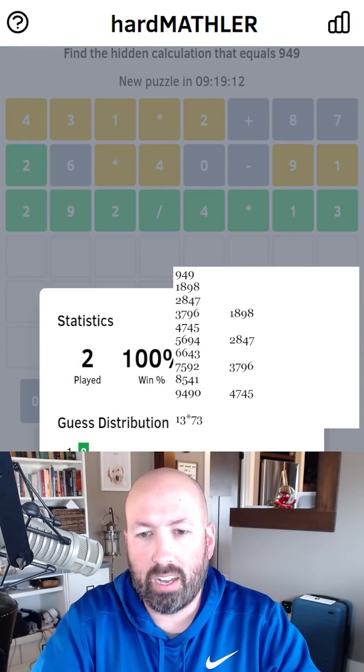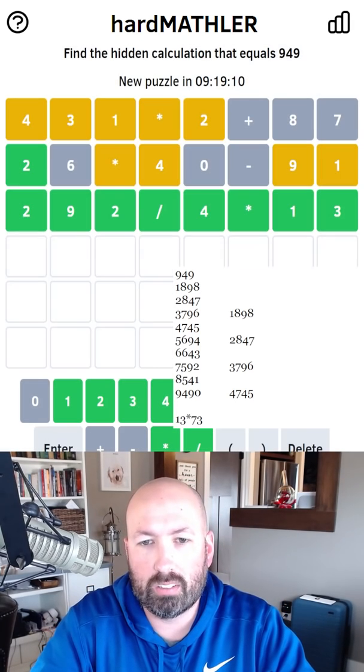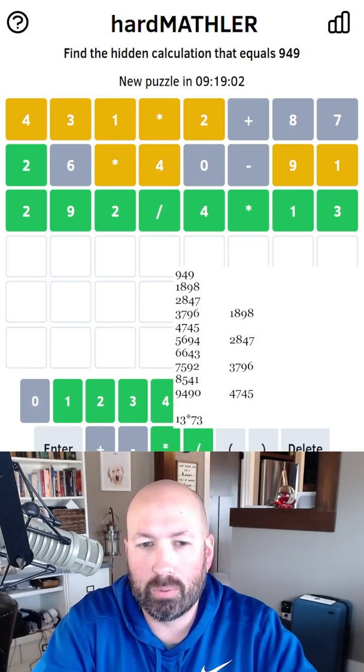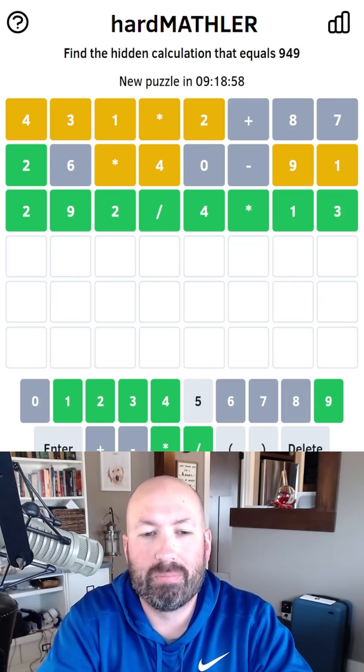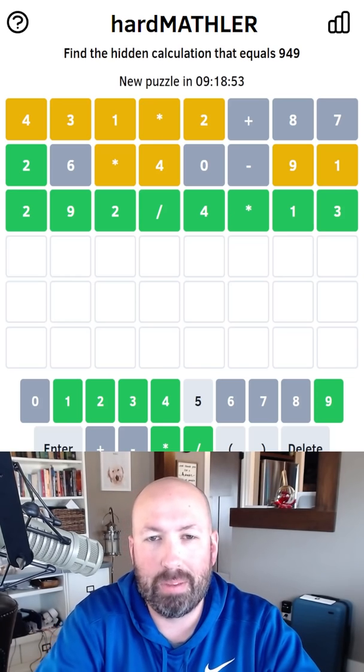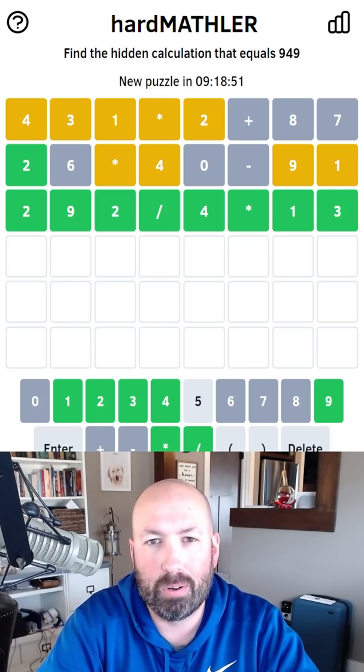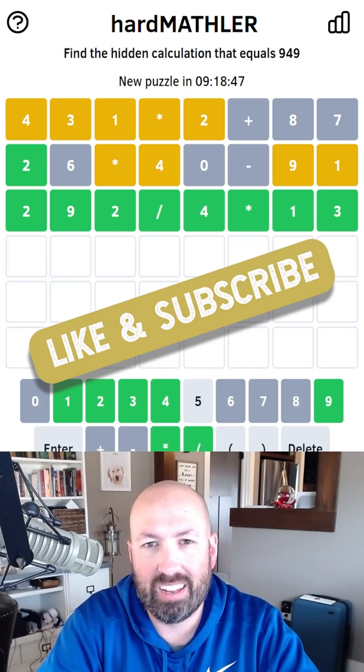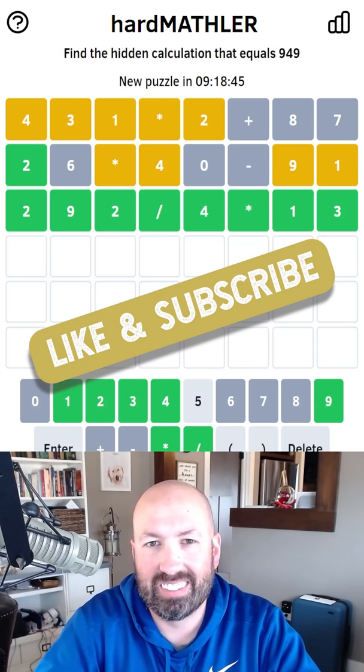Wow, that was a tough one. I don't know, maybe I just had the wrong approach early on, but that one seemed really tough for some reason. I went down a rabbit hole with the multiples of 949 that led us nowhere. Yeah, let me know how you did with this hard mathler and if you had a better approach, or yeah, how it went for you. I'll see you again soon with some more puzzles. Thanks, bye!